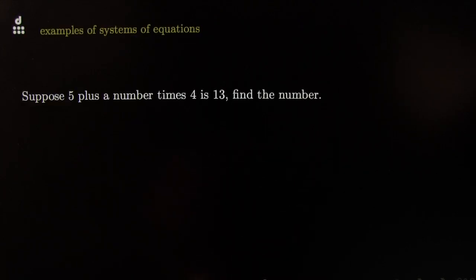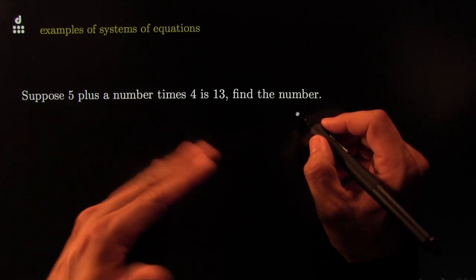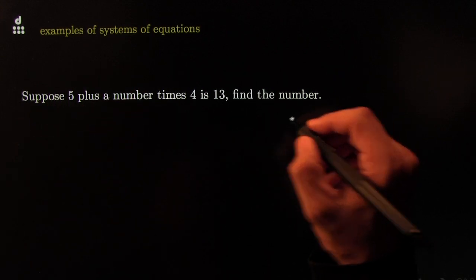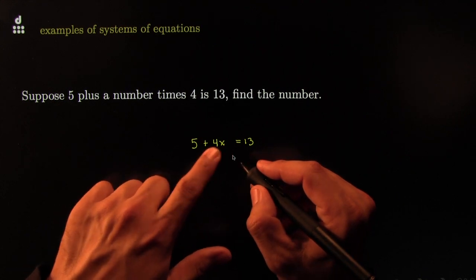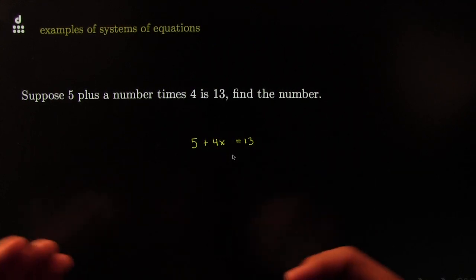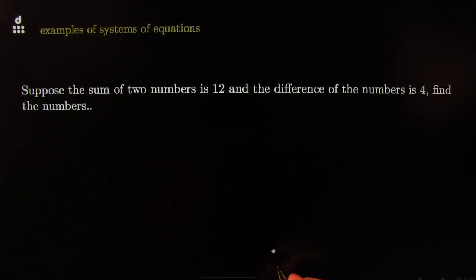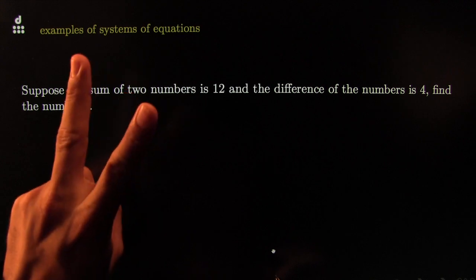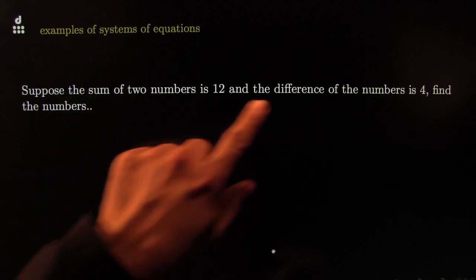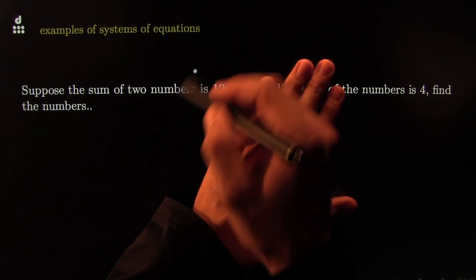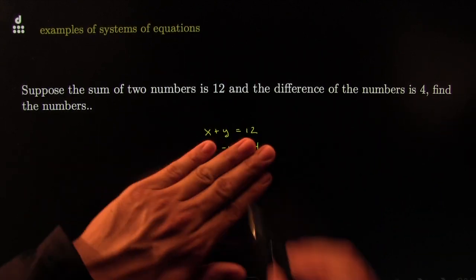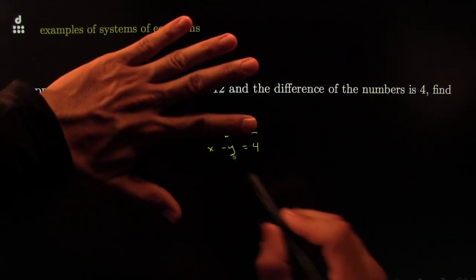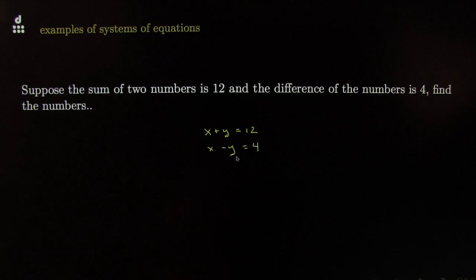To make it more concrete, consider a typical example from previous sections. An equation would go something like this: 5 plus a number times 4 is 13, written as 5 plus a number times 4 equals 13. Now compare that with the following: suppose you have two numbers, not one but two. Their sum is 12, and their difference is 4. That gives you one equation and then another, so now you have two equations. The sum of the two unknown numbers is 12 and the difference is 4. That right there is a system of equations — this is the forest, a bunch of equations, each equation like a tree.